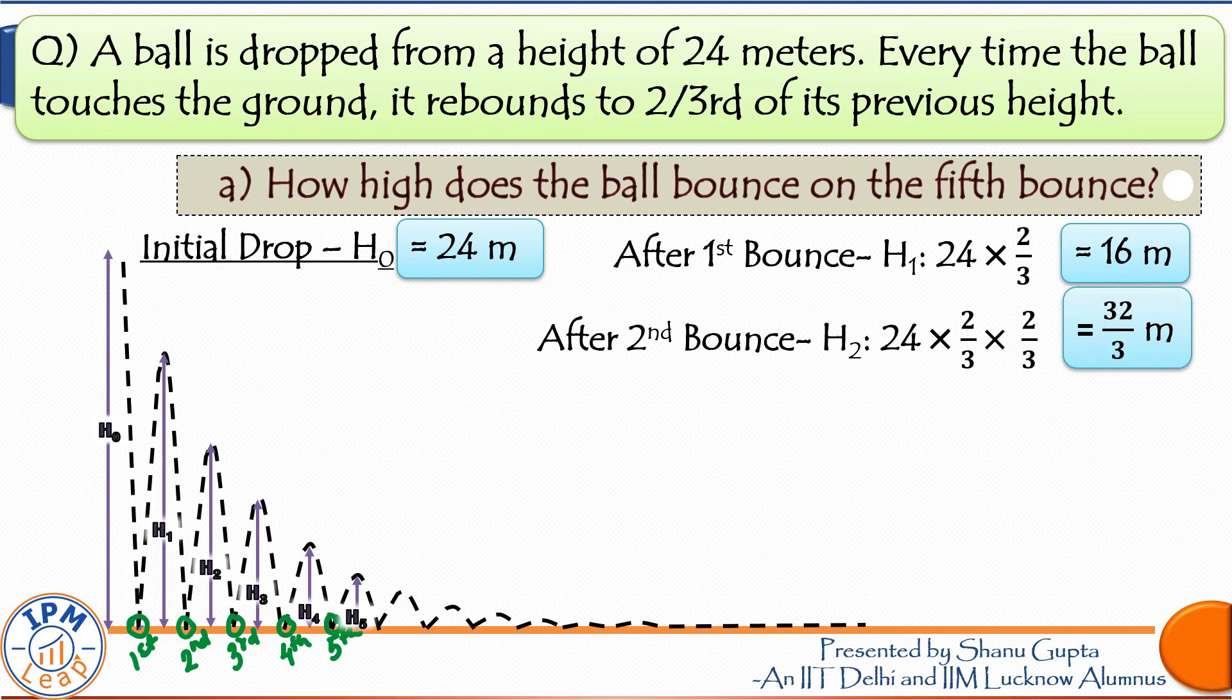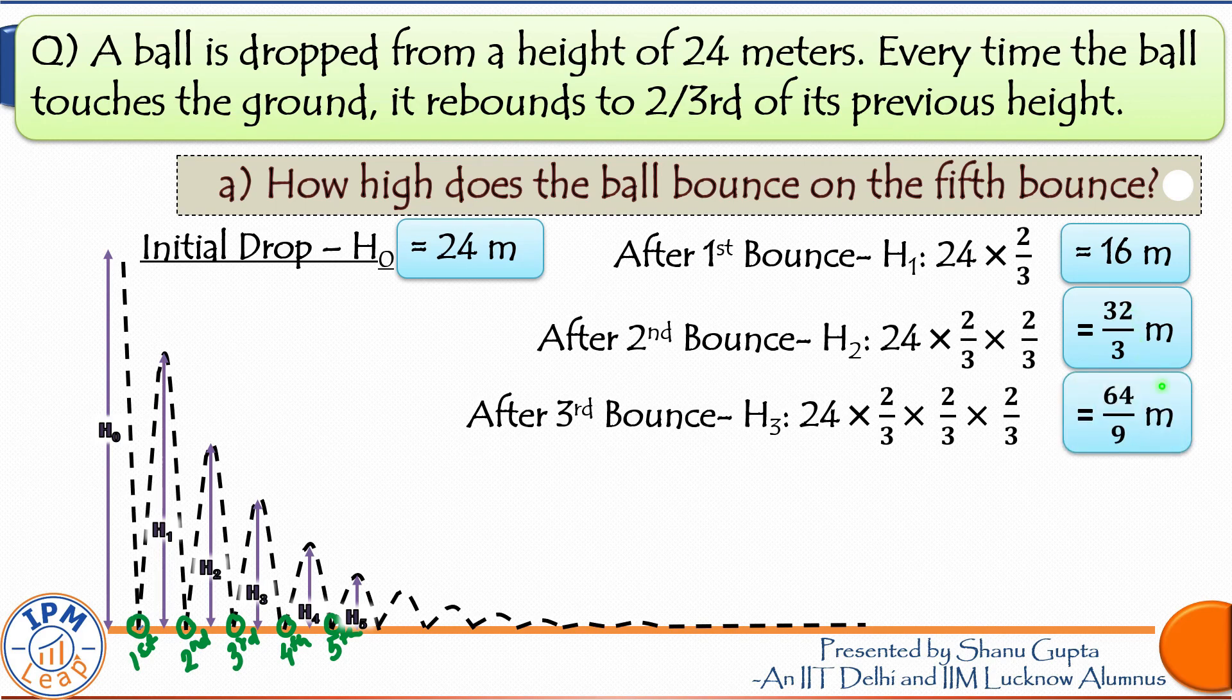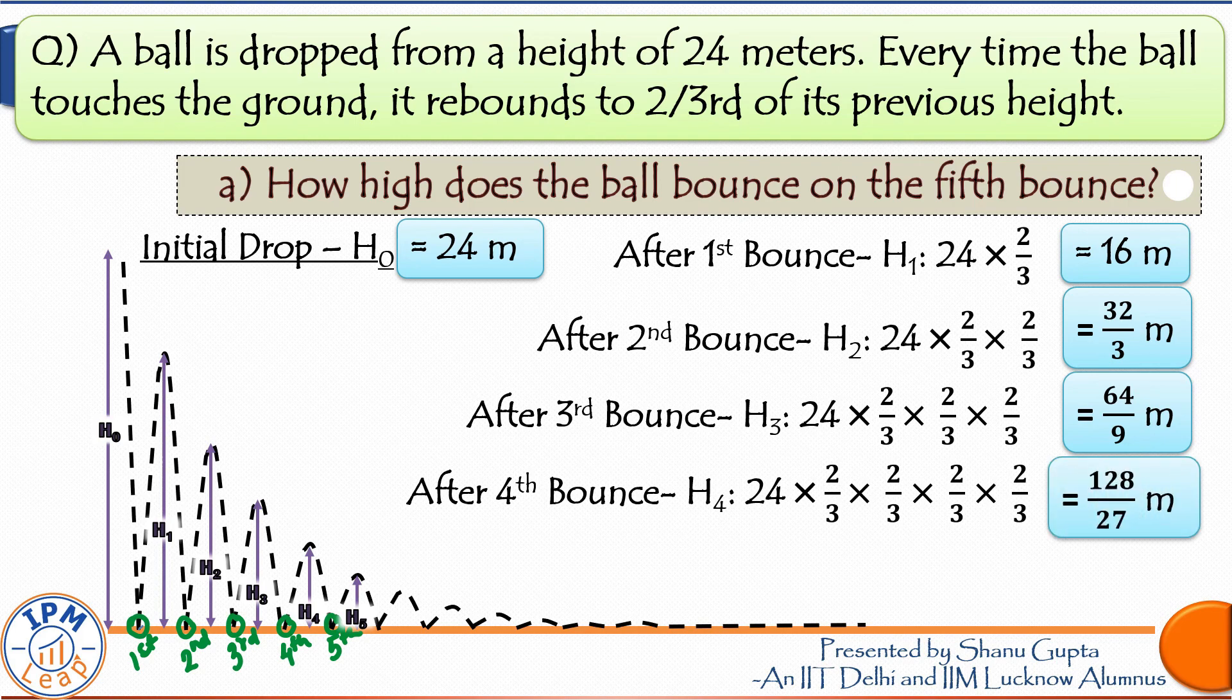The third time it rebounds, it will bounce back to two-thirds of the previous height attained. This one. So H3 will be 32/3 times 2/3, that is 64/3, that is 128 upon 27 meters.